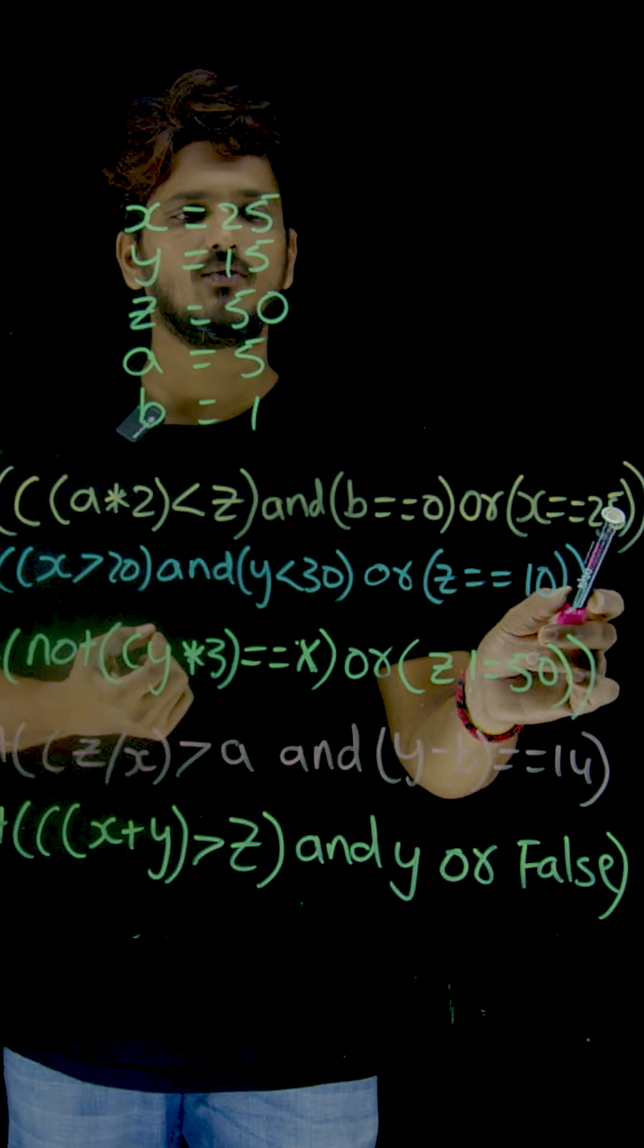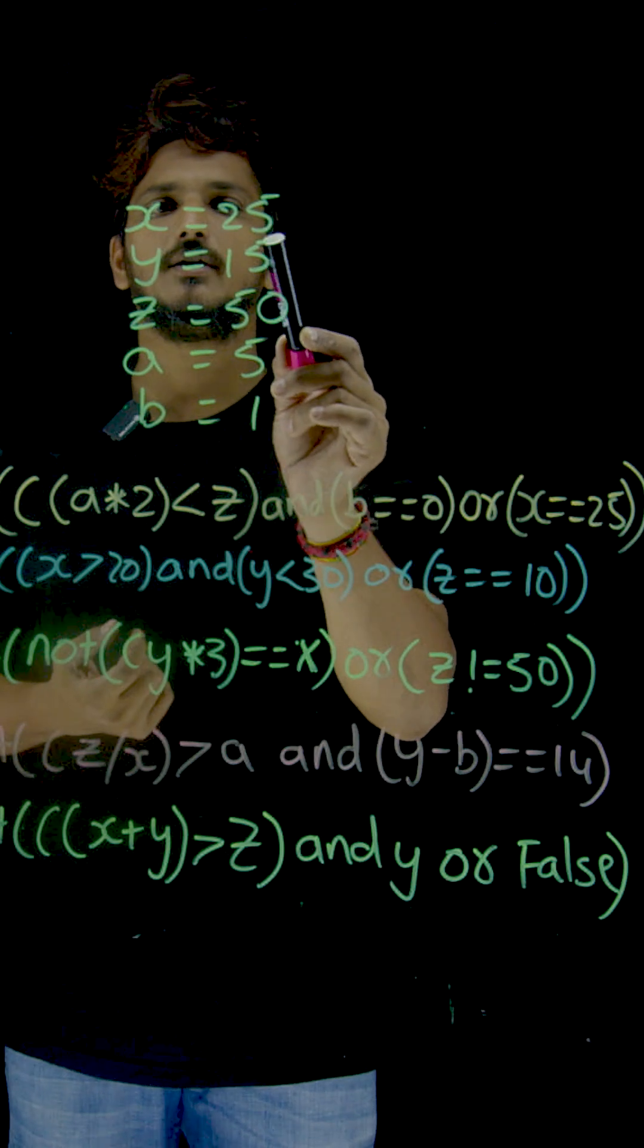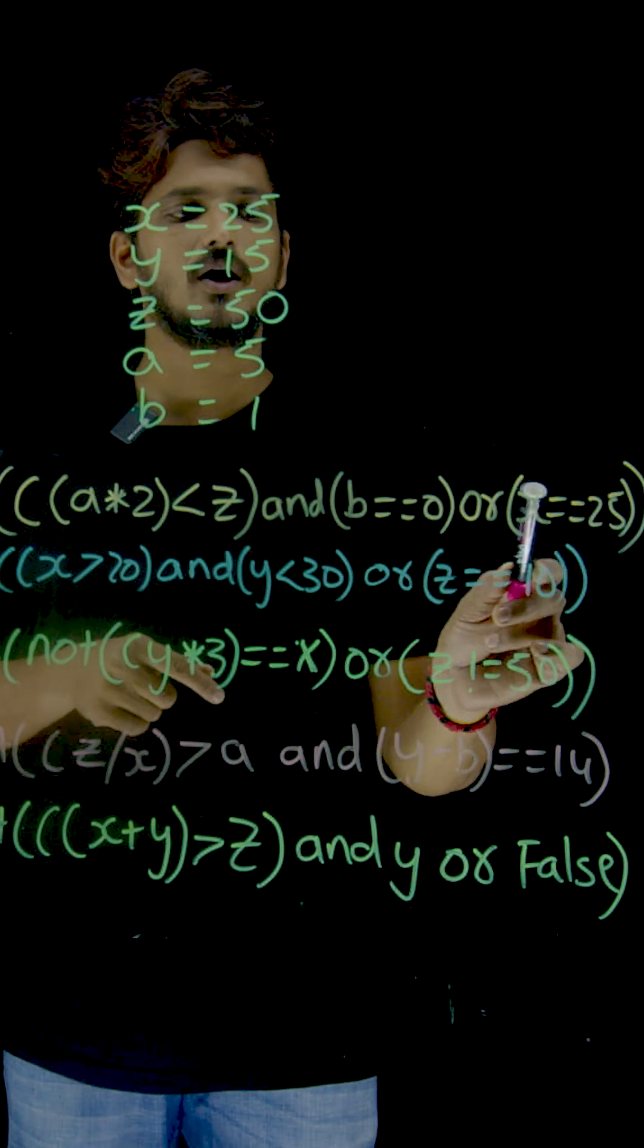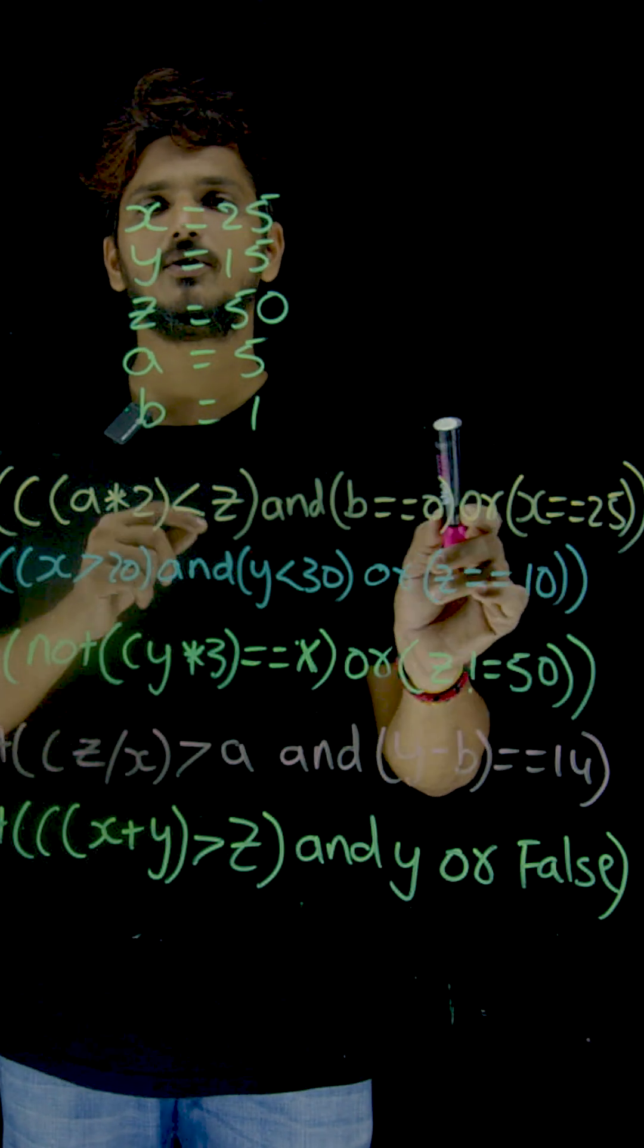Or x equal to 25. 25 equal to 25, true. False or true, you are going to get true.